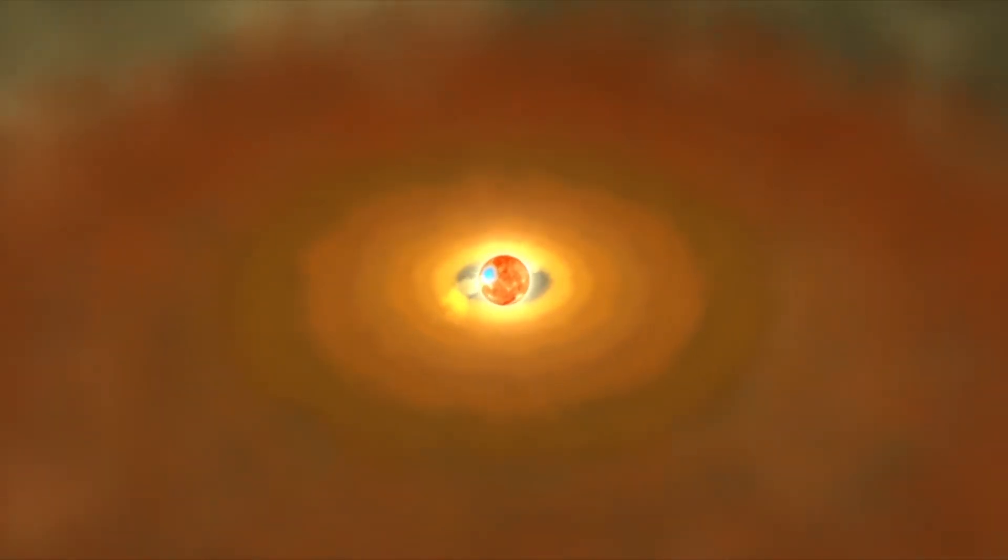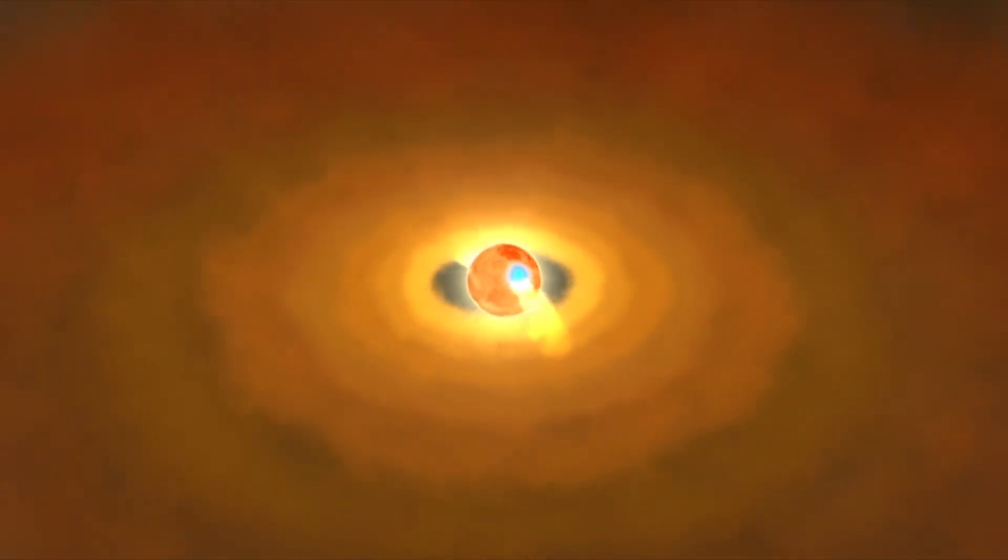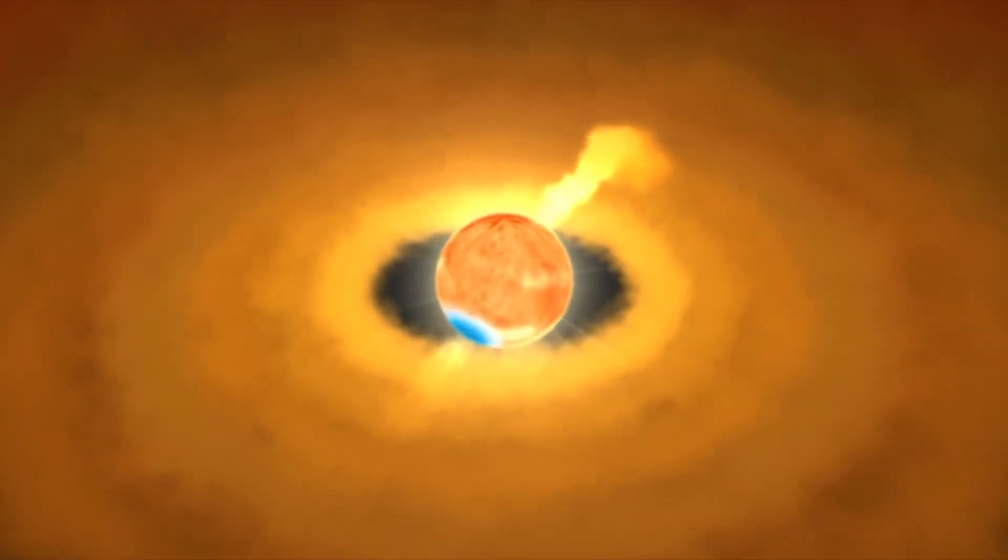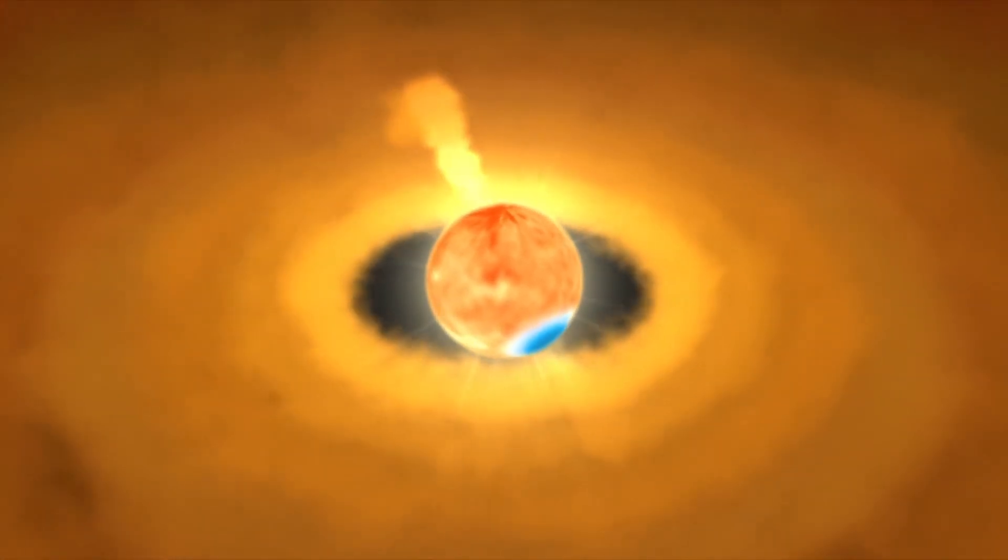Hence, the center grows denser and hotter and over millions of years, the clump grows into a small, dense body called a protostar.